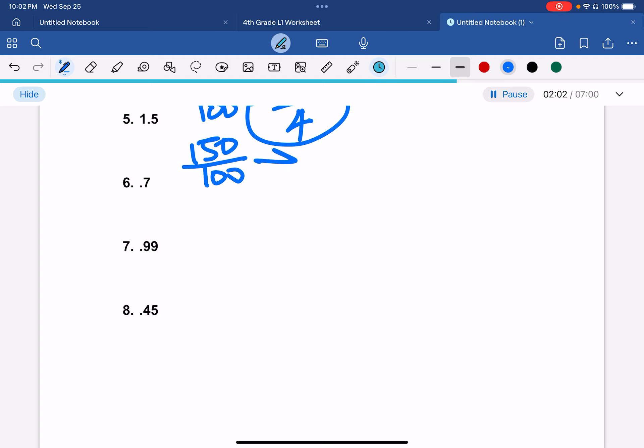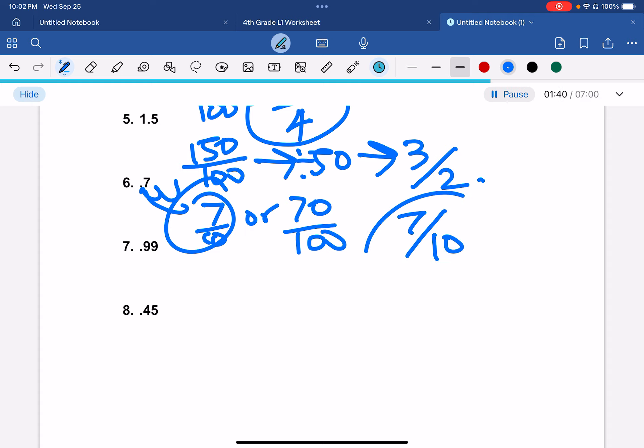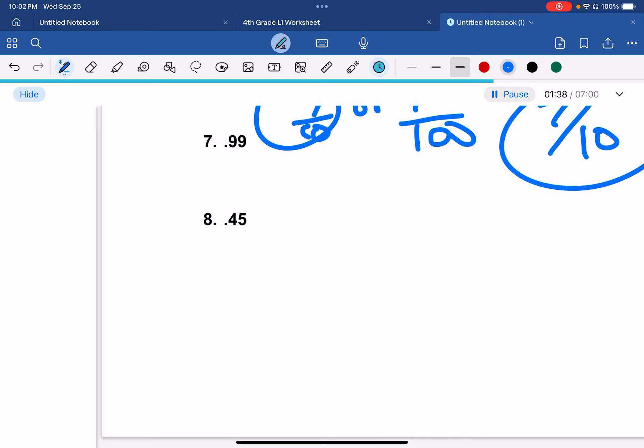1.5 would be 150 out of 100, which we can divide by 50, which would give us 3 over 2. Okay. 0.7, that would be, since we're moving 2 decimals, it would be either 7 over 10 or 70 over 100. But this is more simplified, so it would be 7 over 10.